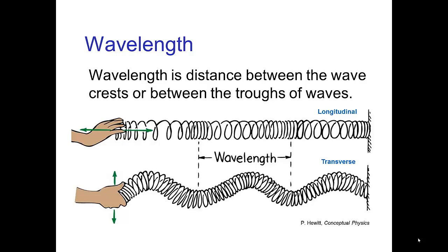Let's define them first. The wavelength is basically just the length of a wave. The way we measure it is to measure the distance between the peaks of the waves or the troughs of the waves, the wave crests or the wave troughs. You see examples here for longitudinal and transverse waves.